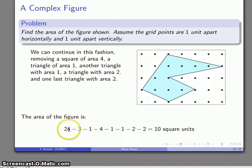I started with my big rectangle, got rid of a couple of triangles, a square, a few more triangles, and a few more triangles, and what's left is the area of the figure, which works out to be ten square units.